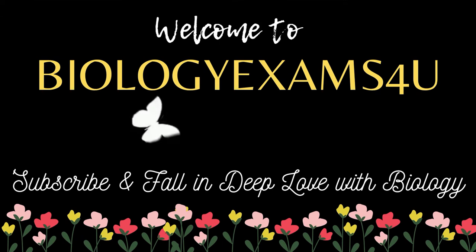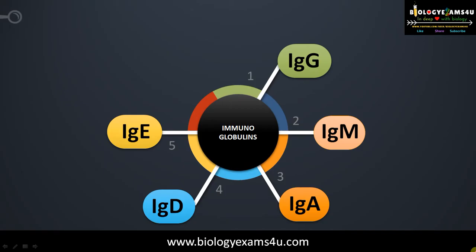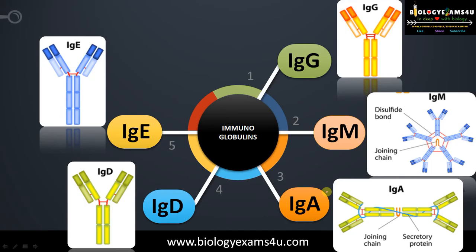Hi friends, welcome to biology exams4u.com. Today's topic of discussion is five classes of immunoglobulins. If you are new to this channel, please consider subscribing. The five classes of immunoglobulins are IgG, IgM, IgA, IgD, and IgE.